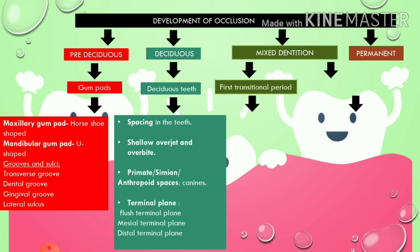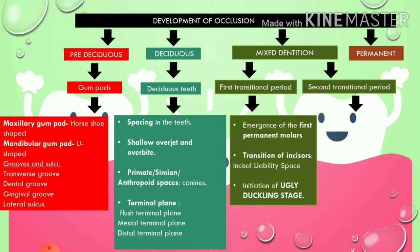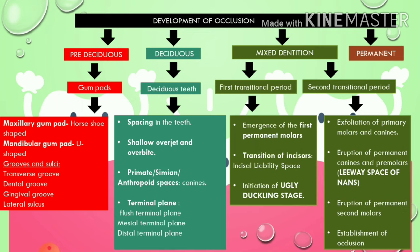In the mixed dentition, the first transitional period includes: emergence of first permanent molars, transition of incisors with incisor liability, and initiation of the ugly duckling stage. The second transitional period includes: exfoliation of primary canines and molars, eruption of permanent canines and premolars with leeway space of Nance, eruption of permanent second molars, and finally establishment of occlusion.